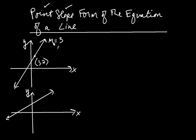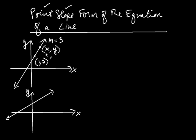Recall that slope is often denoted with an M. Let's make an observation. If I have another point here, I'm going to label that second point as x, y. Remember, the slope is always a relationship between two points — you can use two points to get the slope. So how do I do that?